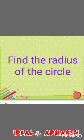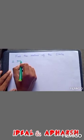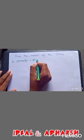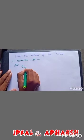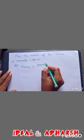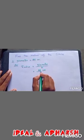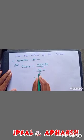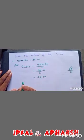Find the radius of the circle. The diameter is given, that is 88 cm. First we want to write the formula: radius is equal to diameter divided by 2. Then substitute: 88 cm divided by 2. Simplify: 44 cm. Therefore the answer is 44 cm.